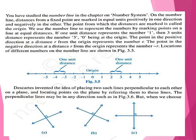We use the number line to represent numbers by marking points on a line at equal distances, approximately equal to one unit, that is one centimeter. If one unit distance represents the number one, then three units distance from O represents the number three, O being at the origin. The point in the positive direction at a distance r from the origin represents the number r. The point in the negative direction at a distance r from the origin represents the number negative r. Numbers on the left side of zero are negative integers, represented by negative r.